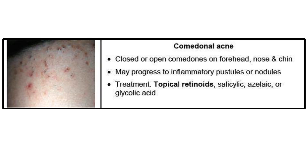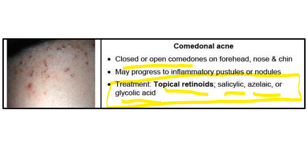The first type of acne is comedonal acne. Comedones are blackheads in general terms. They can be closed or open — whiteheads or blackheads — depending on oxidation. They are mostly present on the forehead, nose, and chin, and can progress to severe forms like inflammatory pustules or nodules. For comedonal acne, we give the simplest treatment: benzoyl peroxide or other organic acids like salicylic or glycolic acid, and topical retinoids.